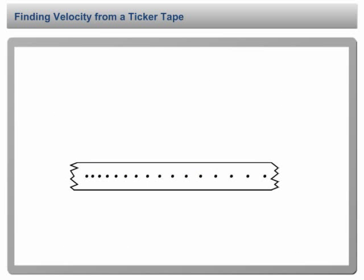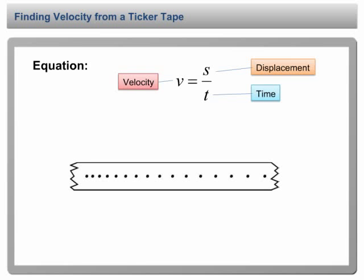Finding velocity from a ticker tape. If you still remember, the velocity of a motion can be determined by the equation v equals s over t.